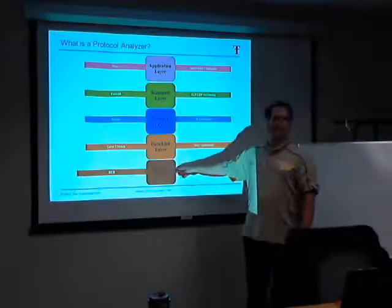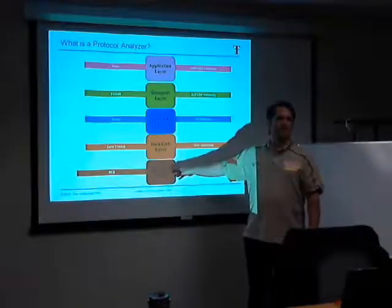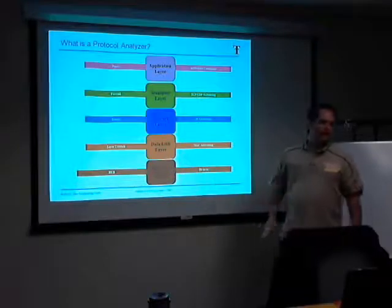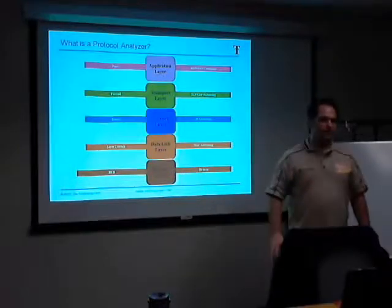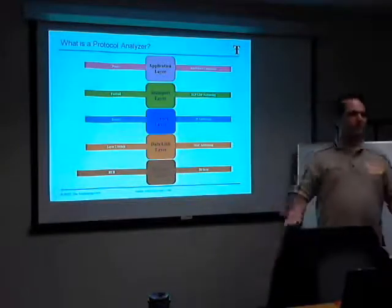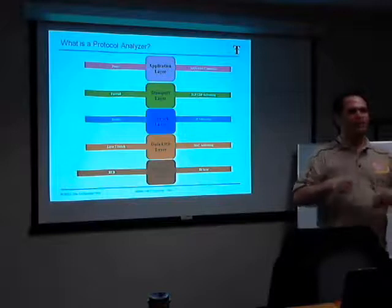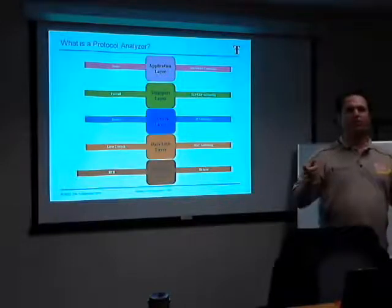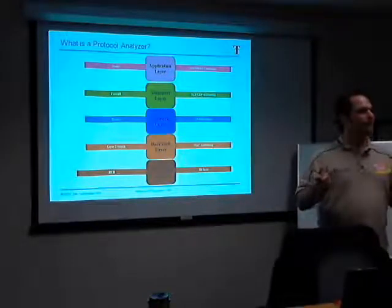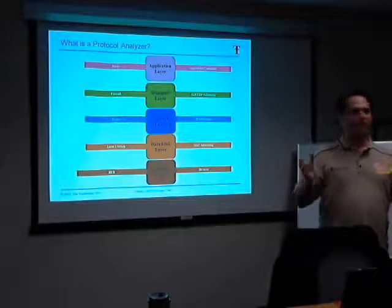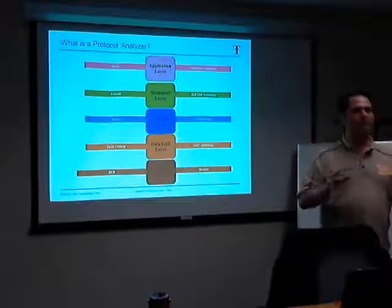Layer one is the physical layer — it's called the bit layer. The bit layer simply means ones and zeros. So if I was to type Tony — T-O-N-Y — that's made of a bunch of zeros and ones. That's all we're trying to do: represent data in its simplest form, zeros and ones.